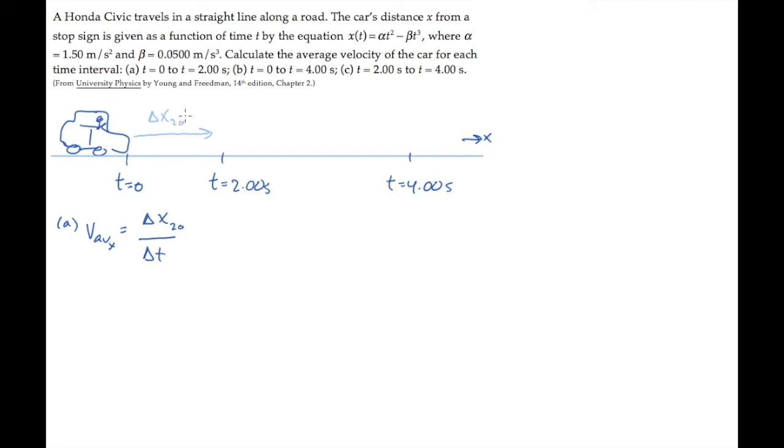That displacement is shown here. It's the change in position between those two times. Part b asks us for the average velocity between times 0 and 4 seconds. So that's the displacement between times 0 and 4 seconds, divided by delta t, with the displacement or change in position for those times shown here.